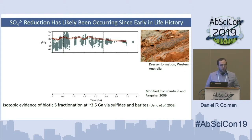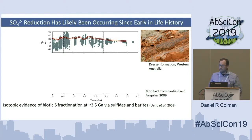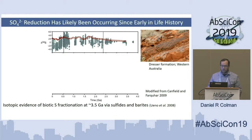We have a good idea that this microbial metabolism has been an important part of life since very early on. Through analysis and investigation of the Dresser Formation in Western Australia — we've heard several great talks highlighting some of the great finds from this area — we know that microbial sulfate reducers have likely been around since about 3.5 billion years ago, via biotic sulfur fractionation of sulfides and barites.